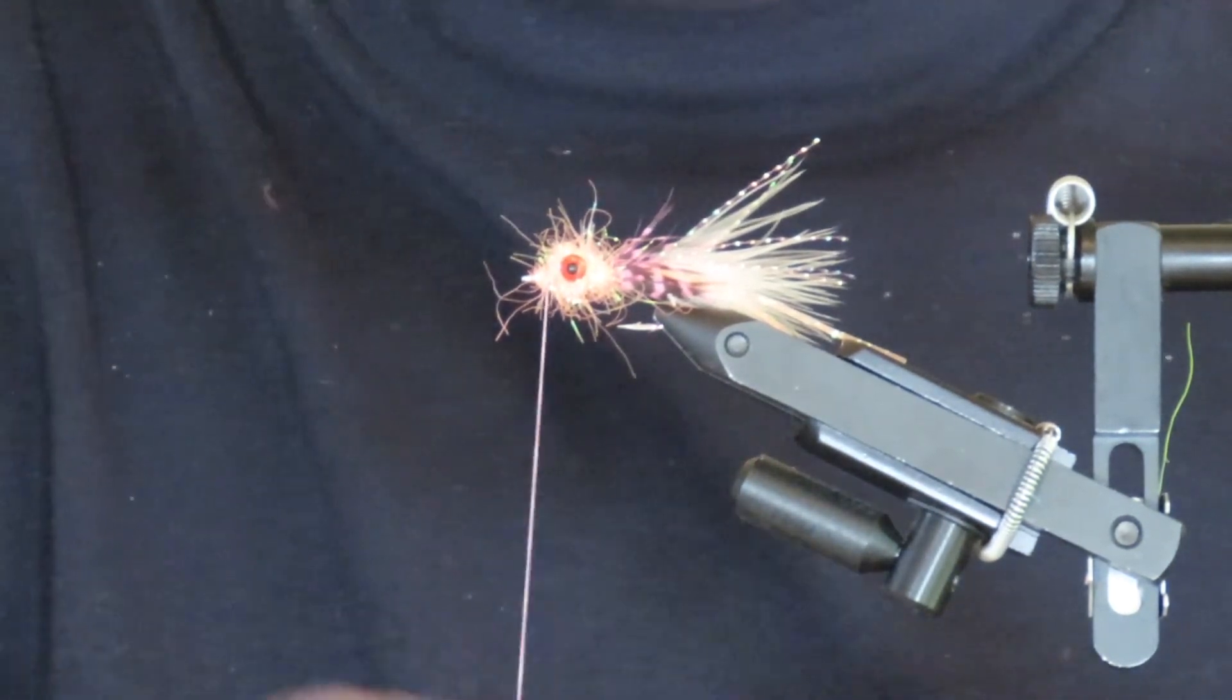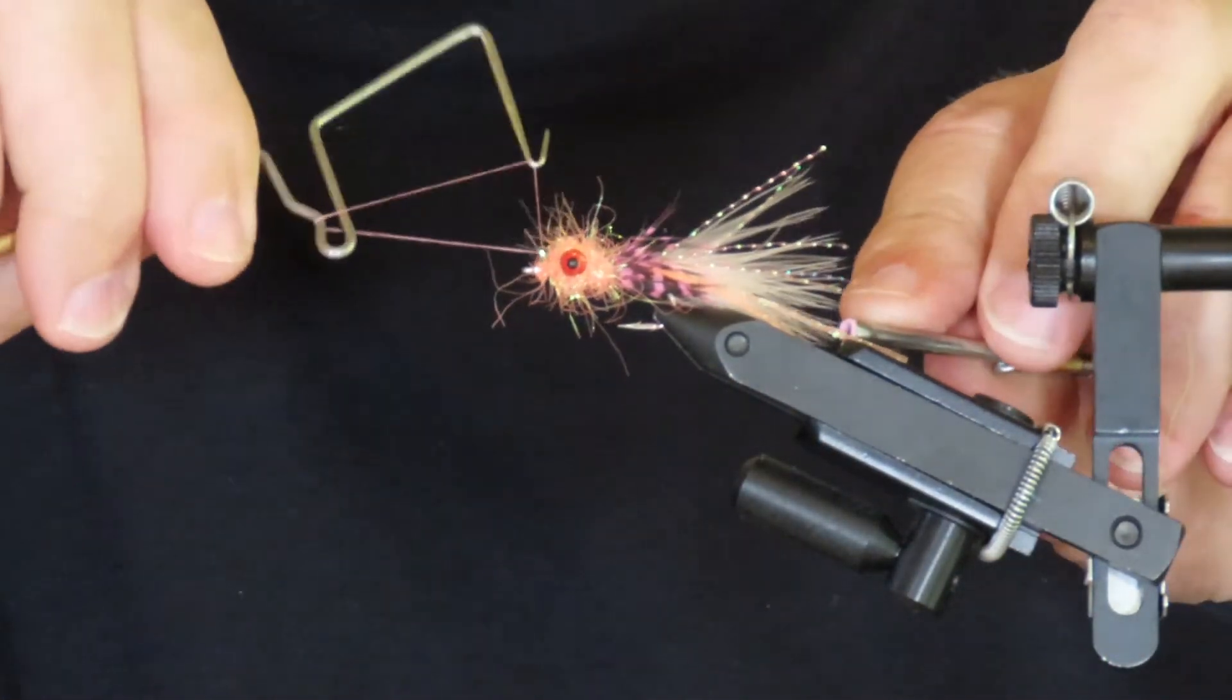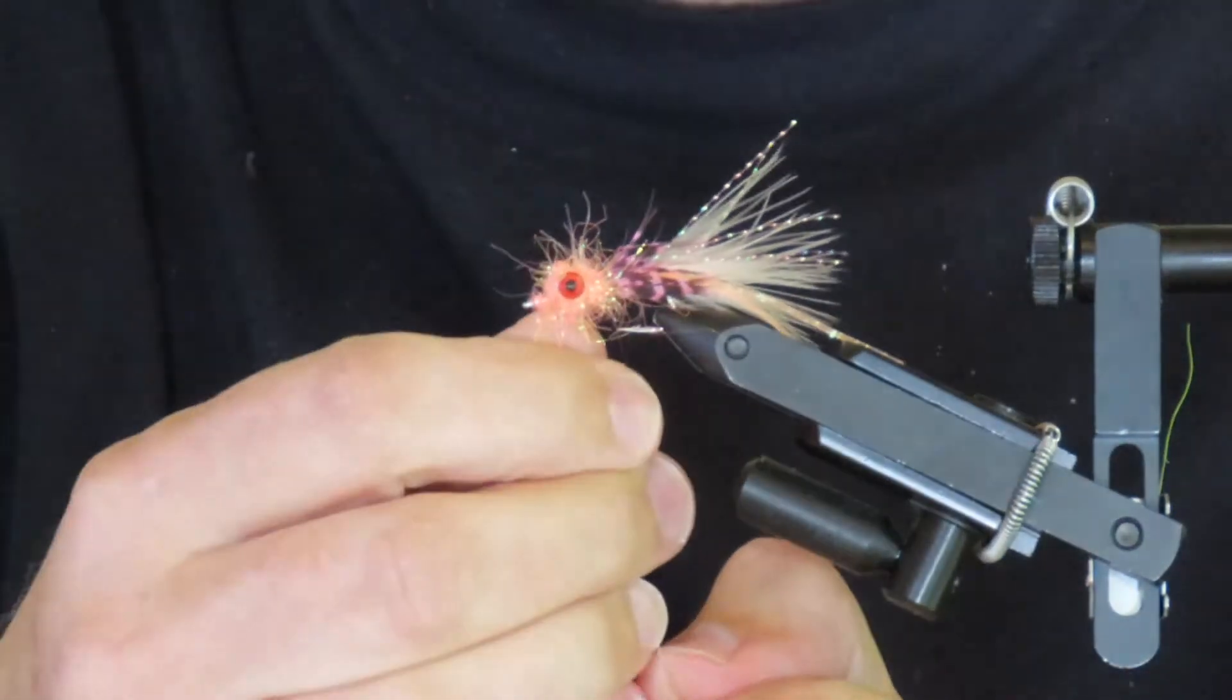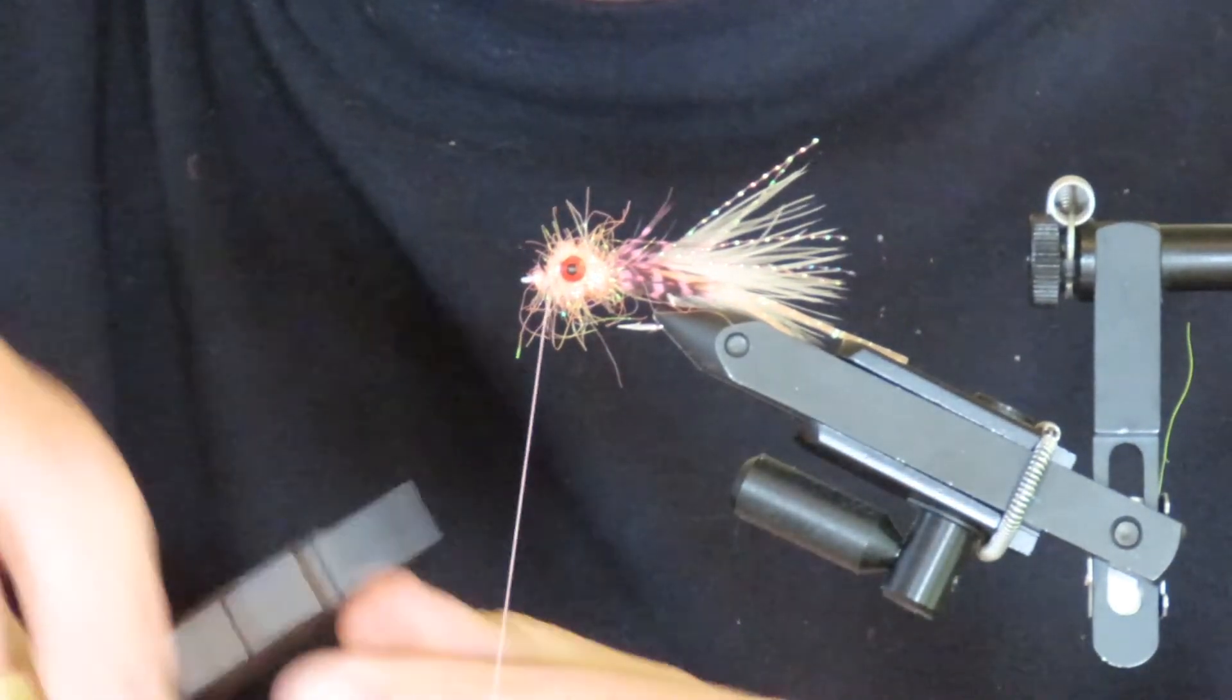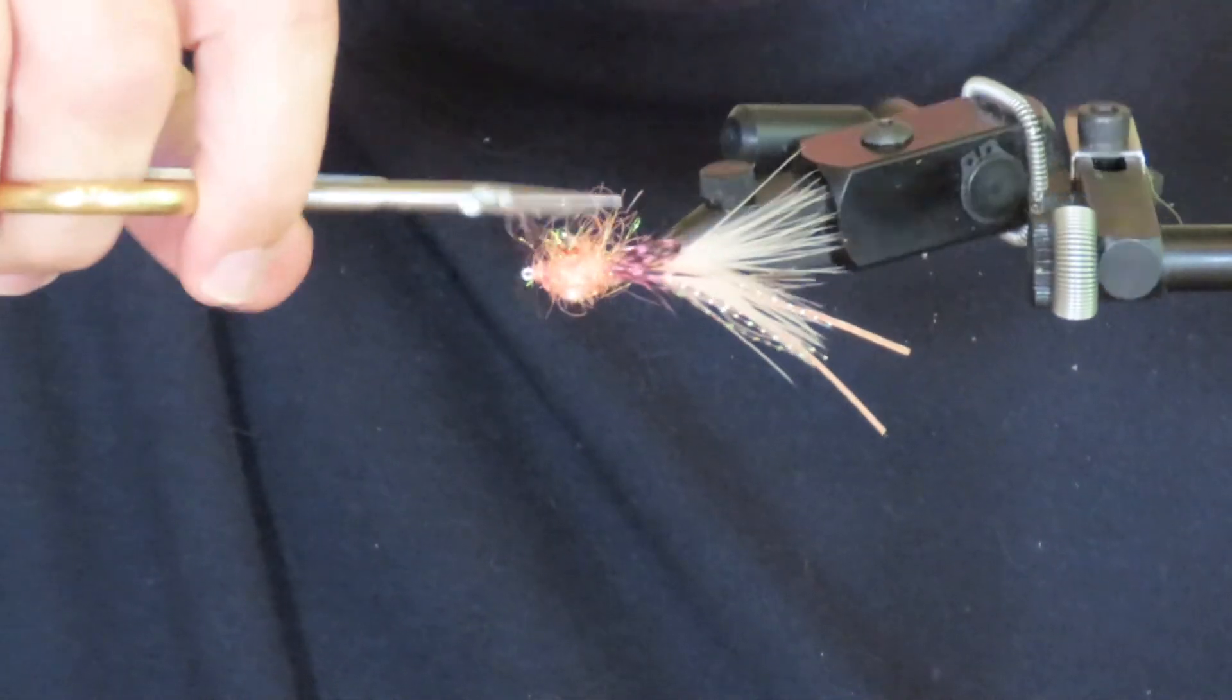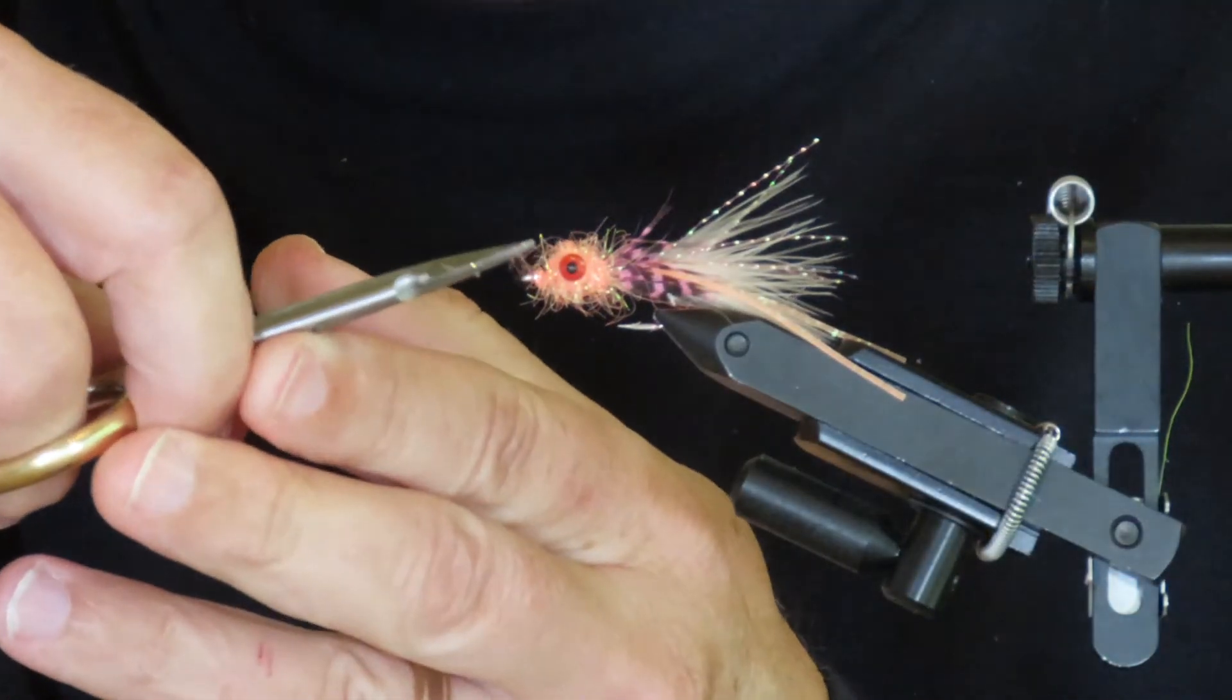I'm going to use my whip-finish tool and put in a whip finish like that. Snug everything up, cut the thread. You could leave it just like this, but I like to trim off the more exuberant bits of dubbing from the head. Make sure that the eye is clear.